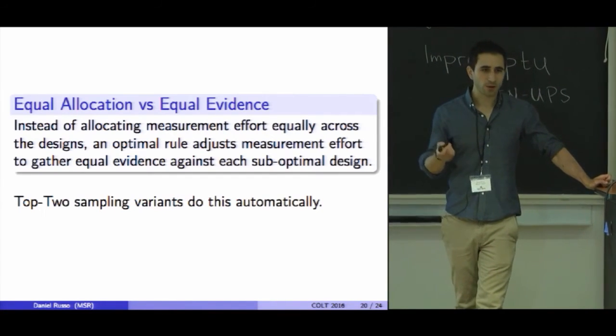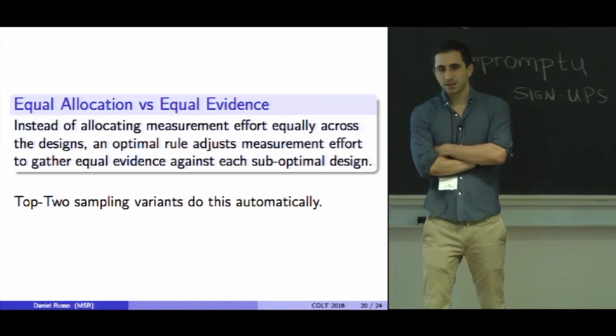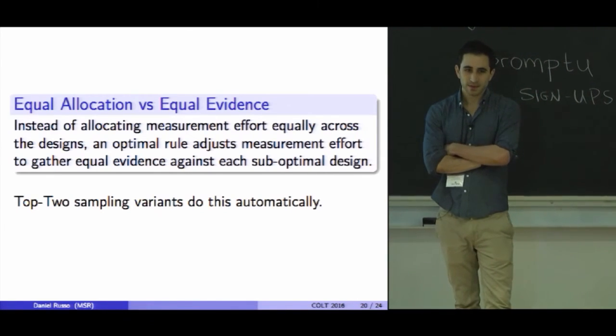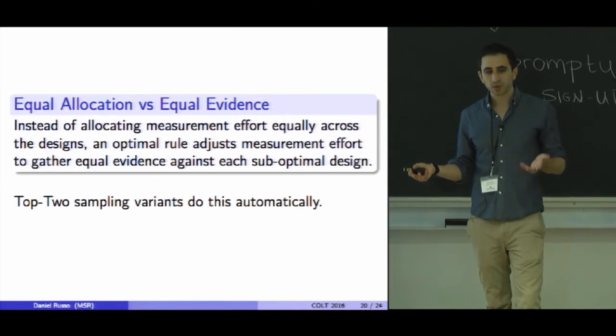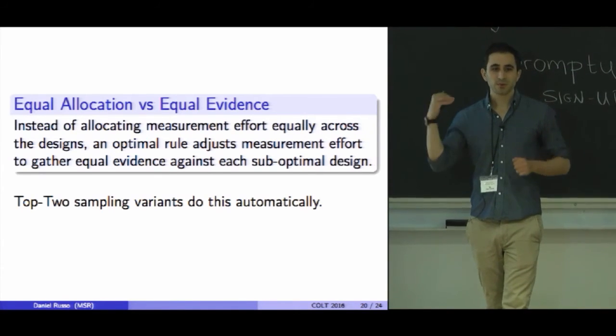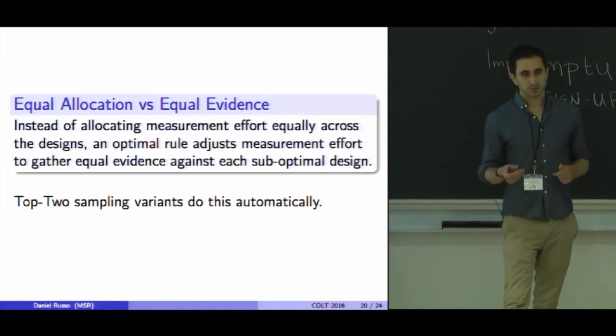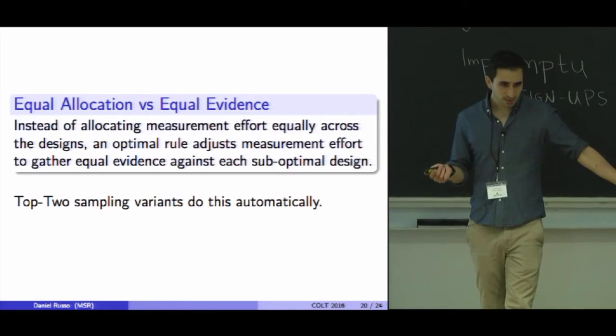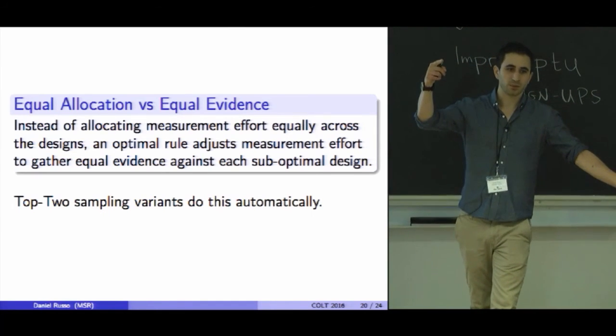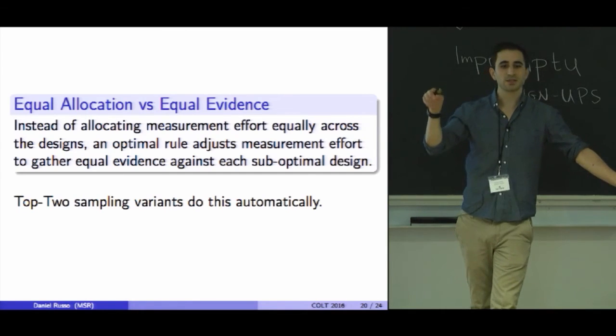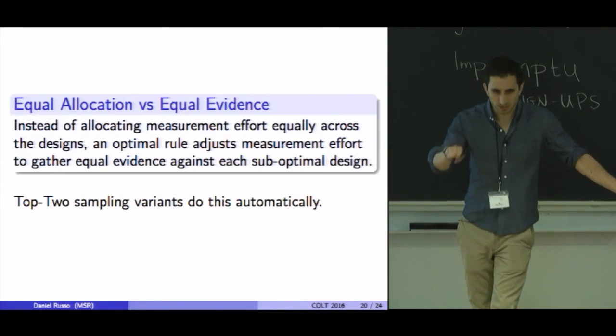Instead of going through exactly what γ* is, I just want to give you the main intuition for why these algorithms might do the best thing. I want to contrast equal allocation with gathering equal evidence. Instead of allocating equal measurement effort to each design, it turns out that the optimal algorithm adjusts measurement effort so that the rate at which it gathers evidence to rule out all of the suboptimal designs is exactly equal. Why does top two sampling do this? It's because if I haven't gathered enough evidence about any suboptimal, then that thing looks like it has a decent chance of being optimal. So I naturally go in and sample all of these things to which I haven't gathered enough evidence, and I automatically adjust the measurement effort allocated to these designs until they come to the top level.